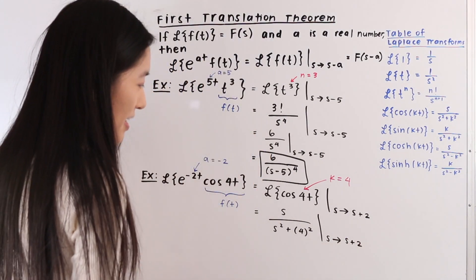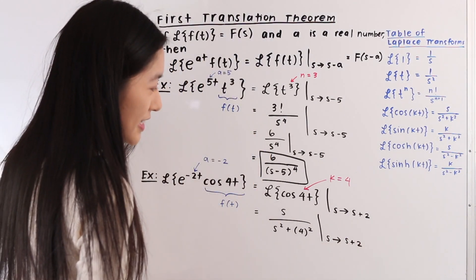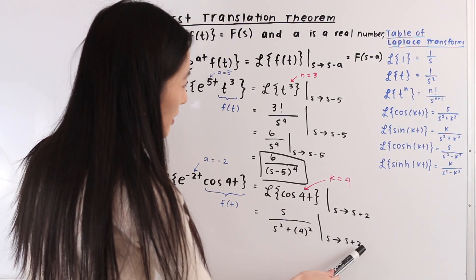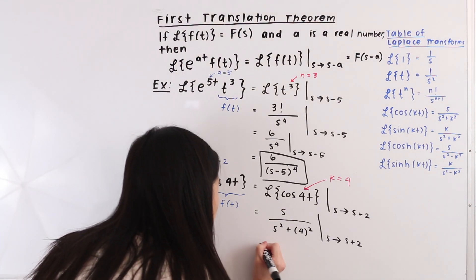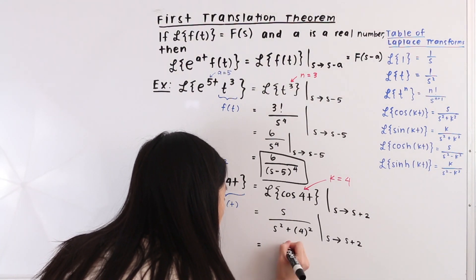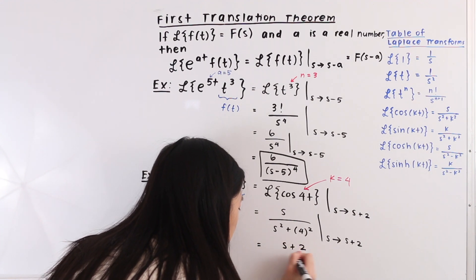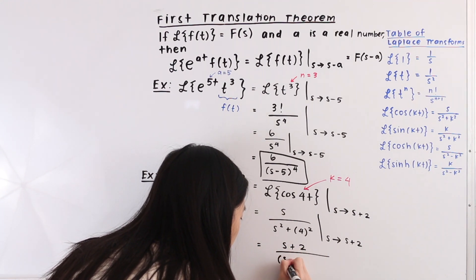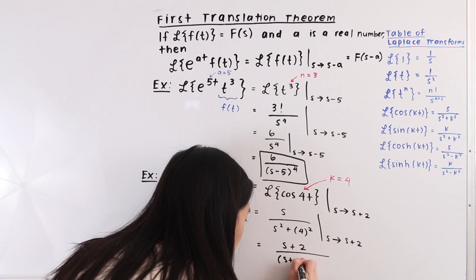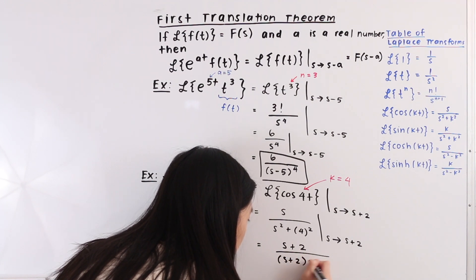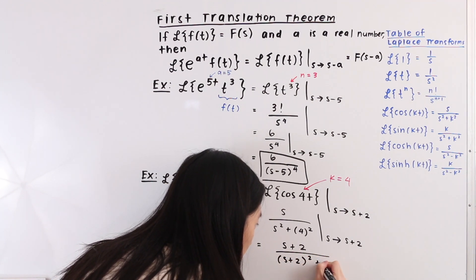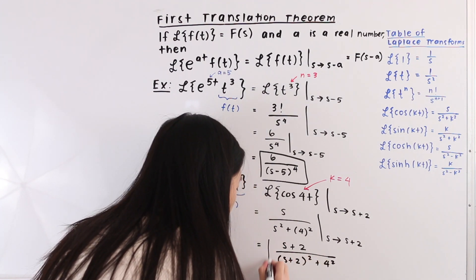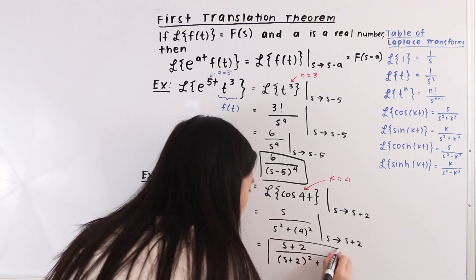In our last step, anywhere we see an s we replace it with s plus 2. So we have s plus 2 over s plus 2 squared plus 4 squared, and that is our final answer.